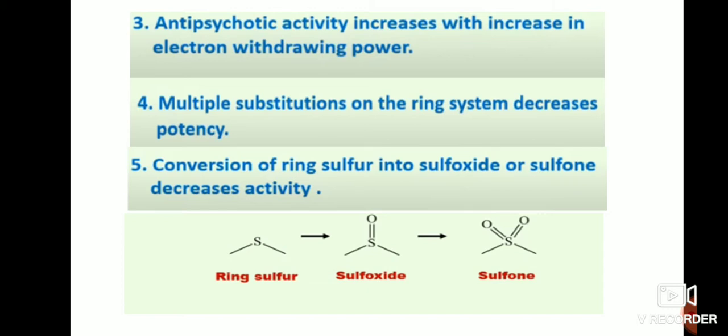Antipsychotic activity increases with an increase in the electron-withdrawing power of the substituent group — if stronger electron-withdrawing groups are present, activity may increase. Multiple substitution on the ring system decreases the potency; if multiple substitutions are present on the phenyl ring, potency may decrease.